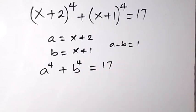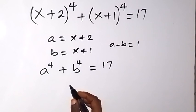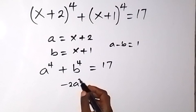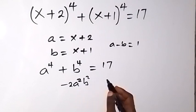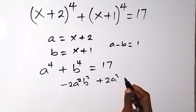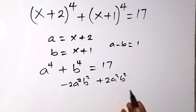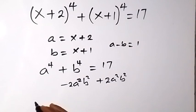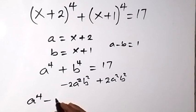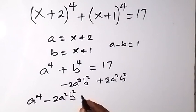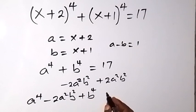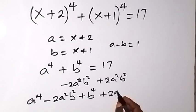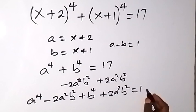From a⁴ + b⁴ = 17, we subtract 2a²b² and also add 2a²b² — so we have not changed anything. This gives us a⁴ - 2a²b² + b⁴ + 2a²b² = 17.